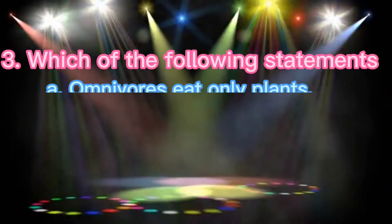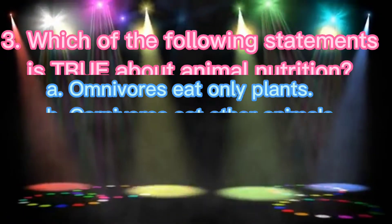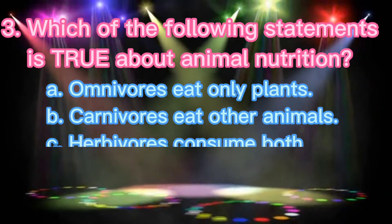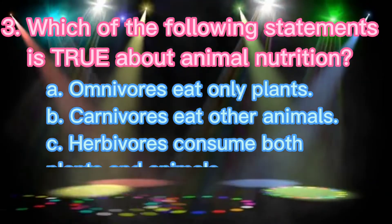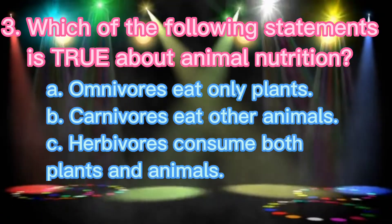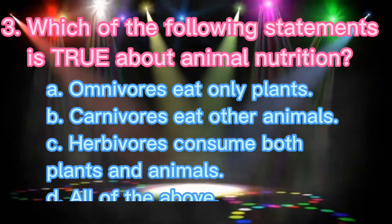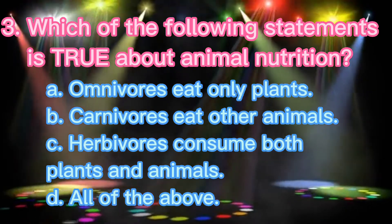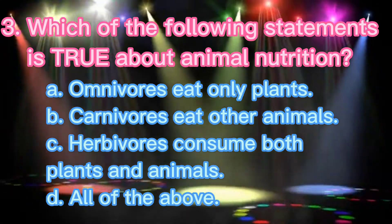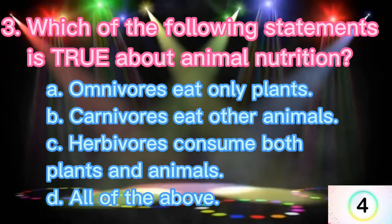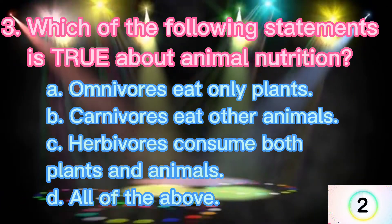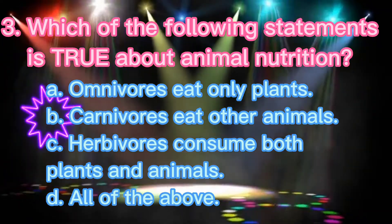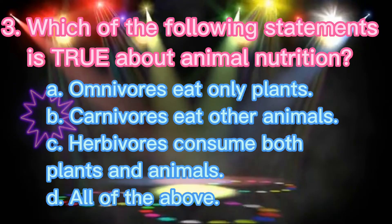Number 3. Which of the following statements is true about animal nutrition? Letter A: Omnivores eat only plants. Letter B: Carnivores eat other animals. Letter C: Herbivores consume both plants and animals. Letter D: All of the above. The correct answer is Letter B: Carnivores eat other animals.